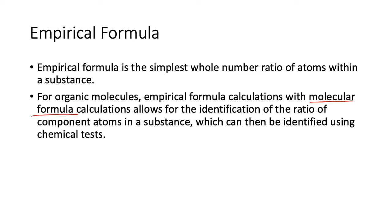It allows for the identification of the ratio of components, which means you can work out what the substance is, and then you can draw possible structures. It's very common to work out the empirical formula and then be given some properties of the substance to work out what it is — we'll go through that at the end, maybe in the last video.